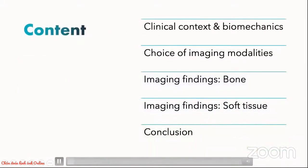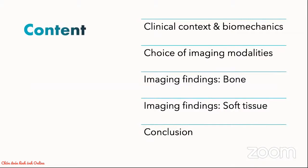To achieve our learning objectives, I will first introduce the clinical context and biomechanics of shoulder instability. I will then run through the choices available to image the shoulder, before showing you some of the common imaging findings in the bone and soft tissue.